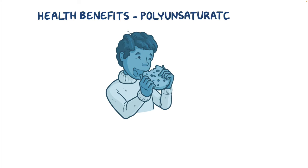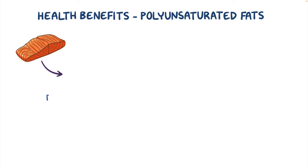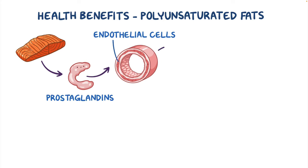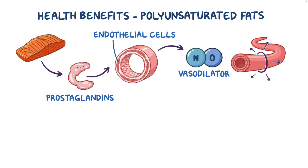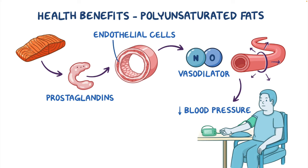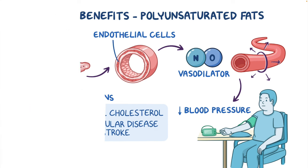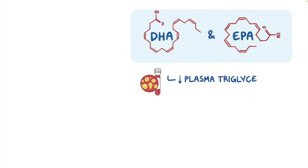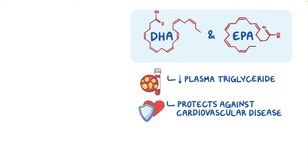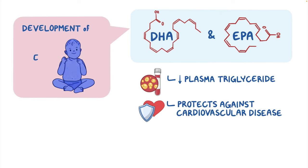Now, fats play a super important role throughout the body, they have a huge number of health benefits, and those benefits can vary by the type of fat we eat. For example, polyunsaturated fats are precursors for hormone-like molecules called prostaglandins that stimulate endothelial cells that line blood vessels to release nitric oxide. Nitric oxide is a vasodilator, so that decreases resistance to blood flow and in turn lowers blood pressure. Polyunsaturated fatty acids can also help reduce the total and LDL cholesterol, and that's linked to lower rates of cardiovascular diseases like heart attacks and stroke. Long-chain omega-3 fatty acids like DHA and EPA can both help to lower plasma triglyceride levels, which also protects against cardiovascular disease. Finally, DHA is important in the development of eyes and brains of young infants.